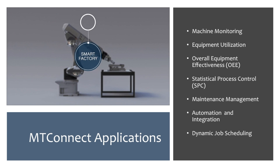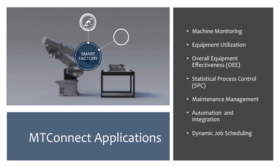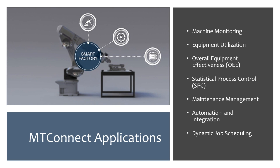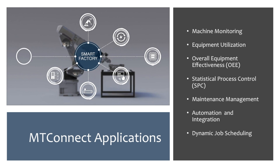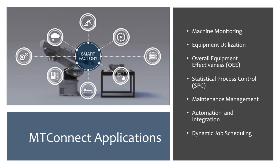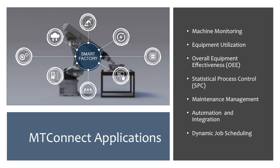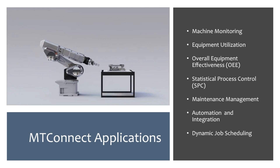Information and data collected from equipment in a manufacturing operation can be utilized in any number of ways. Some of the more traditional uses of this information include machine monitoring, equipment utilization, overall equipment effectiveness or OEE, statistical process control or SPC, maintenance management, automation and integration, and dynamic job scheduling.